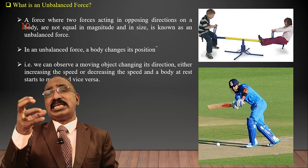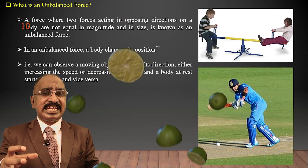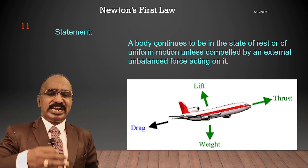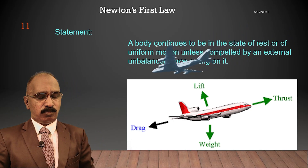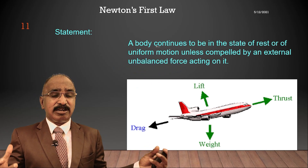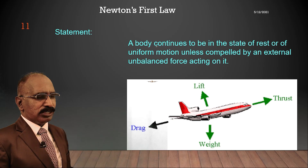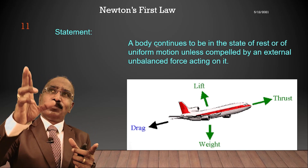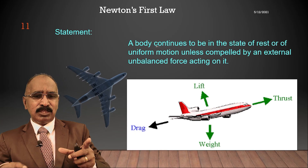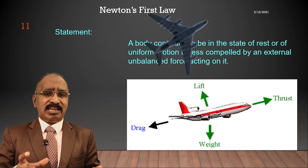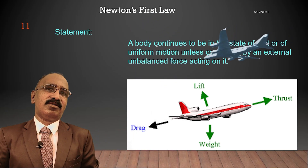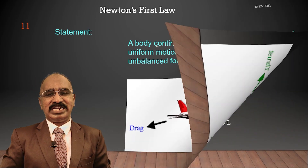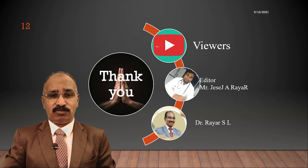The body continues to be in the state of rest or of uniform motion unless compelled by an external unbalanced force acting on it. Consider an aeroplane — four types of forces act on it. Depending on which forces act, it goes forward, lifts up, or comes down. So it depends upon the force, and the unbalanced force determines the motion. This is a beautiful example of Newton's First Law of Motion. So I hope, my dear students, you all would have enjoyed this simple concept of force. Thank you.